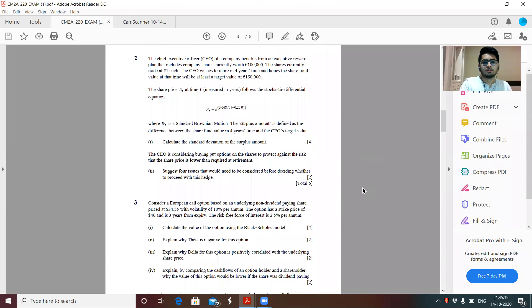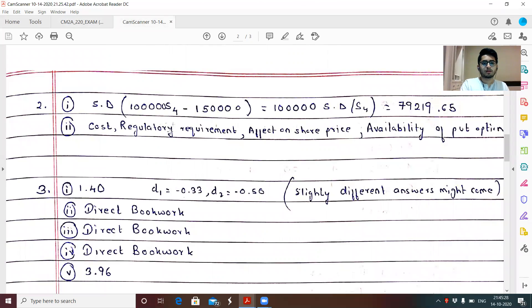Question two. So we have a share price. It follows geometric Brownian motion. It was a pretty direct, straightforward question. Some of them did commit calculation mistakes. So the answer for part two is, this is basically my surplus 1 lakh S4 minus 1 lakh 50,000. The price of share today was one. So if the person invests 1 lakh today, it basically can buy 1 lakh shares. So this comes out to be 1 lakh standard deviation S4, which comes out to be 79,219.65. It's rounded off to two decimal places.